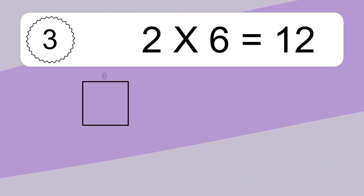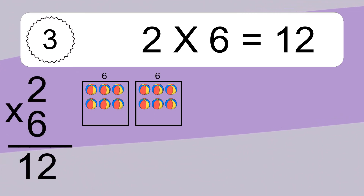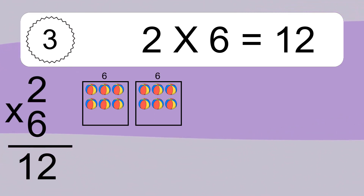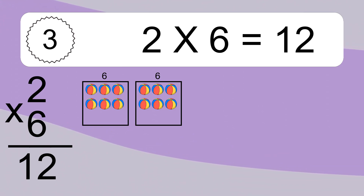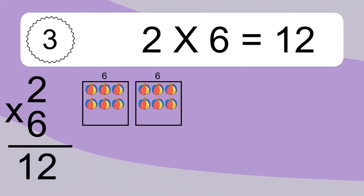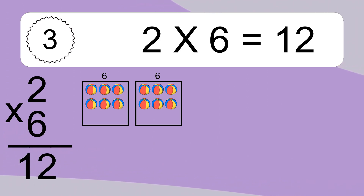2 times 6 equals what? 2 times 6 equals 12. We have 2 boxes, and each box has 6 colorful balls inside. If you count all the balls in all the boxes together, you will have 2 times 6 balls. This equals 12 balls.